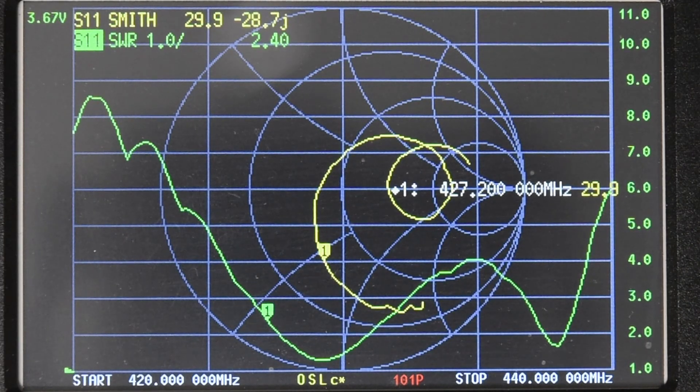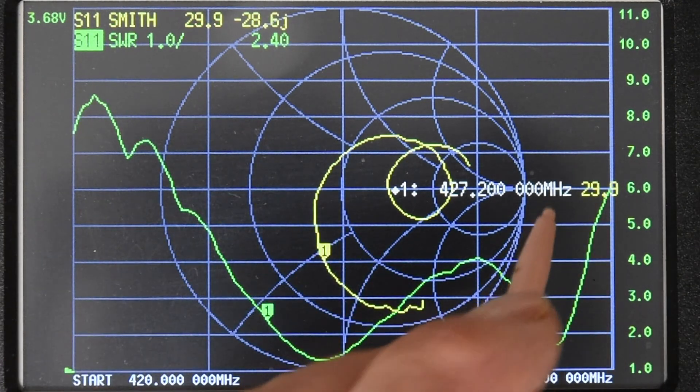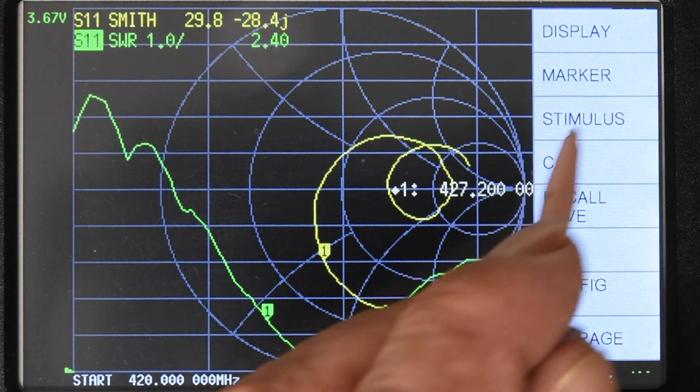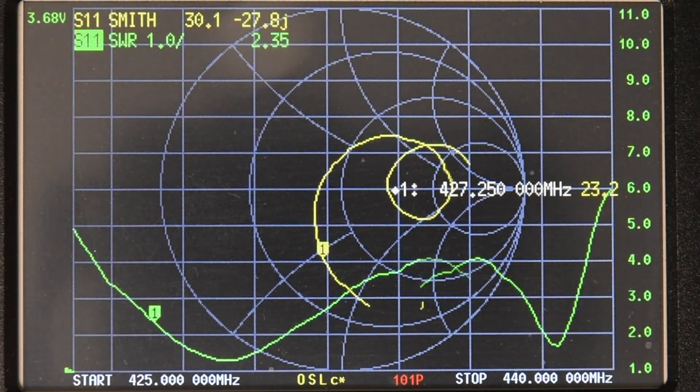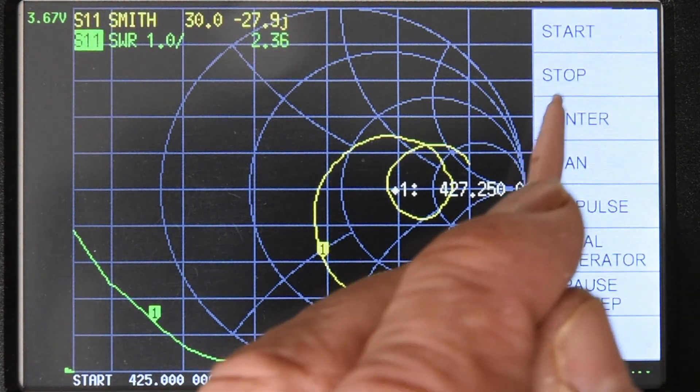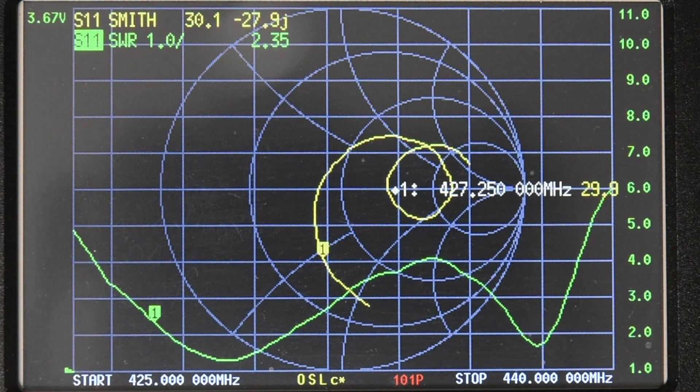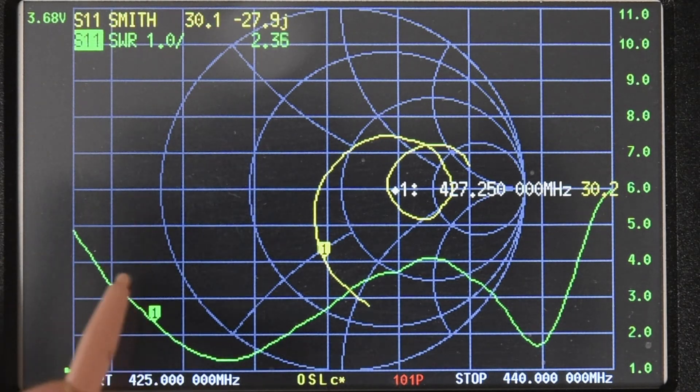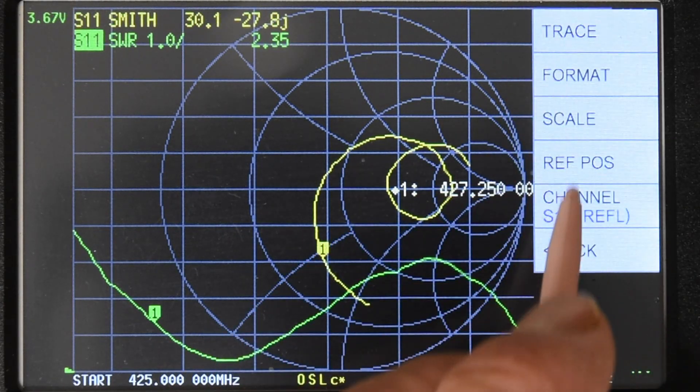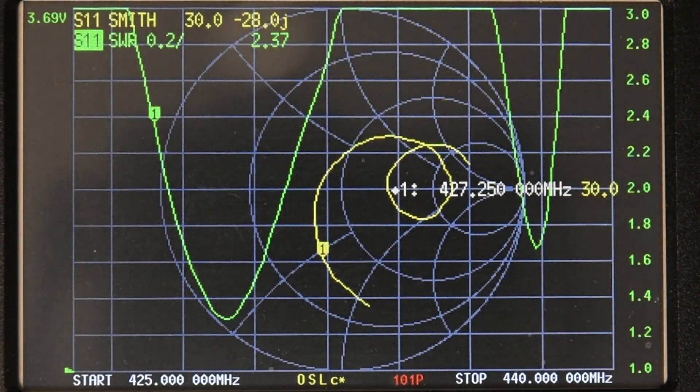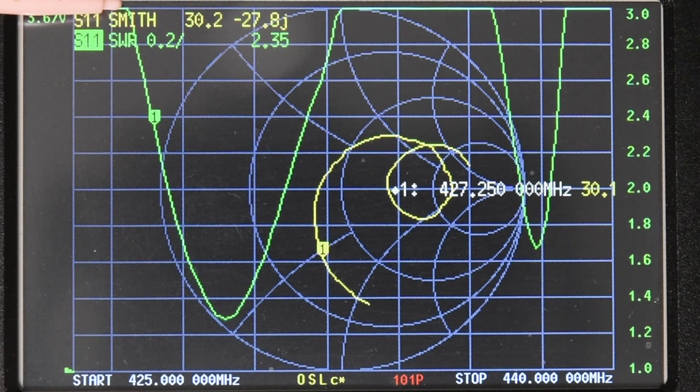So this is the display. We're just going to zoom in a little bit. So we've got a reasonably wide match. I'll just bring the display in a bit tighter. So the scale is now three to one SWR.